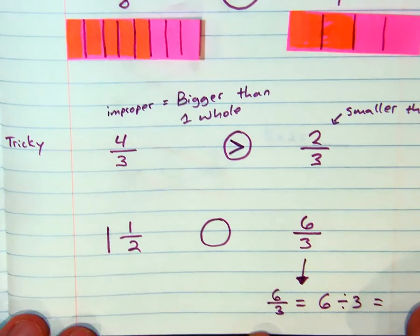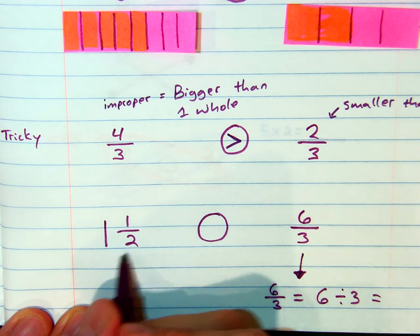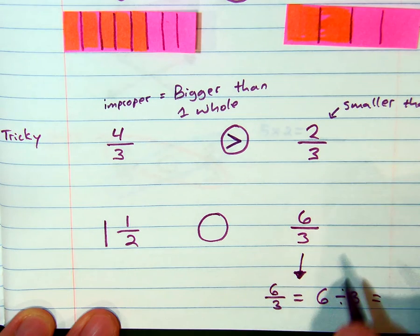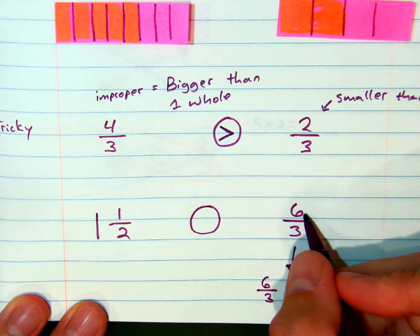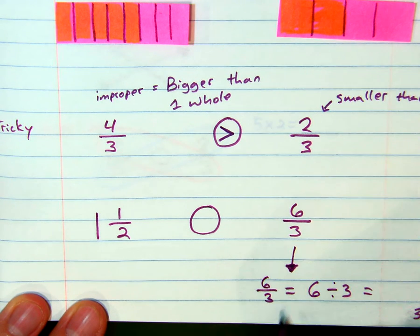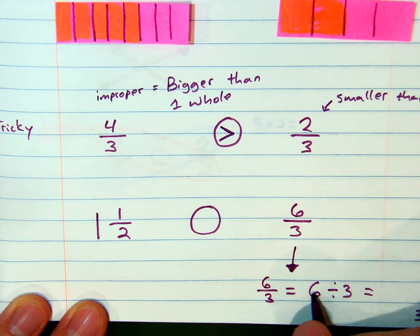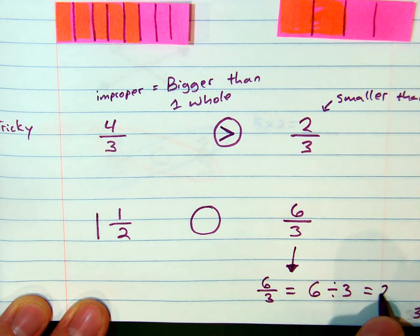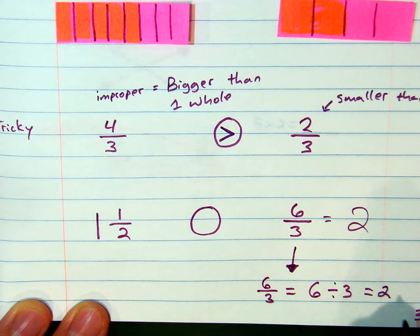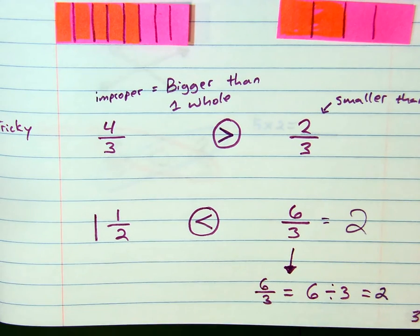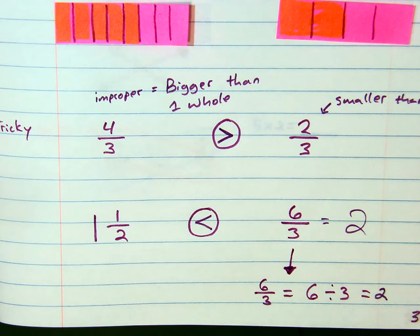Another tricky one: a mixed number — one and one-half — versus an improper fraction. We can simplify the improper fraction: six divided by three equals two. So we're comparing one and a half versus two. One and a half is smaller than two. The same thinking and visualization applies even with improper fractions and mixed numbers.